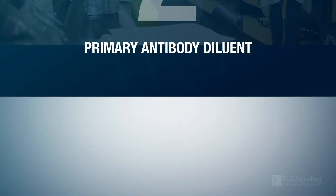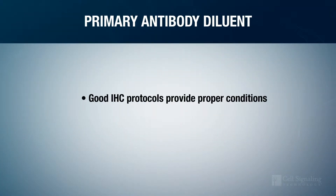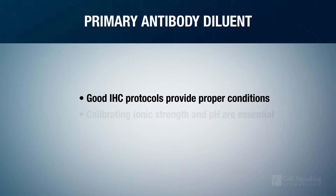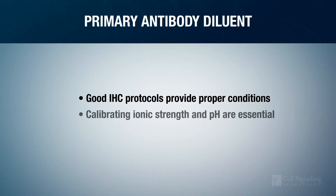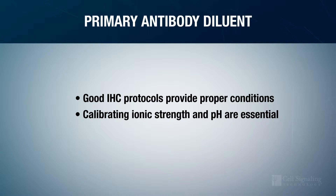Step two: primary antibody diluent. Good IHC protocols provide the proper conditions for a specific binding event to occur. It is therefore essential that you calibrate the ionic strength and pH of the antibody diluent to the specific antigen-epitope interaction you are trying to detect.